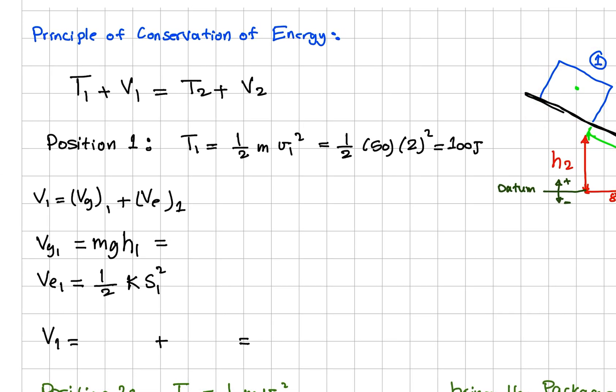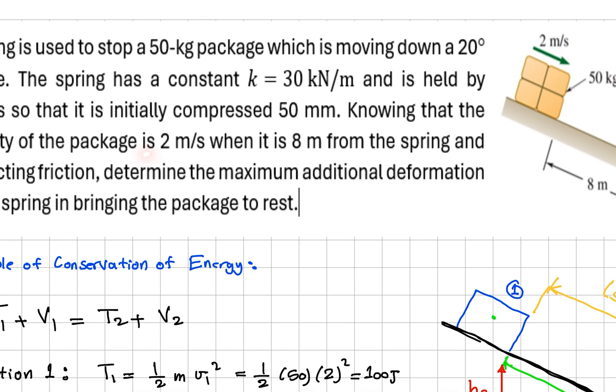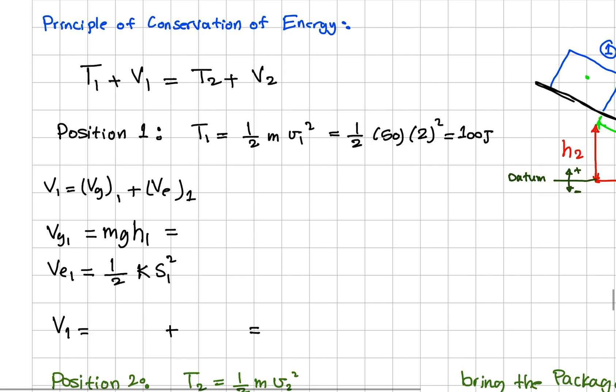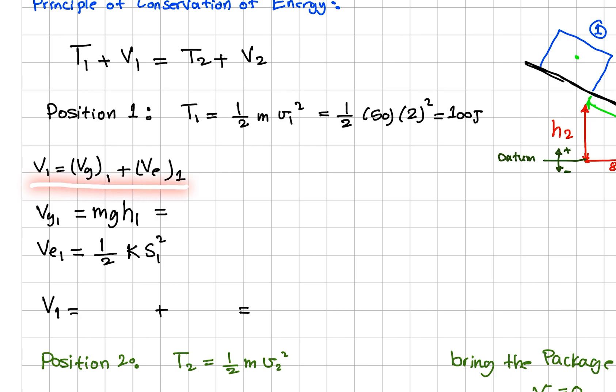Let's get to position 1 and see what we have. In position 1, we have kinetic energy since there is velocity of 2 meters per second given. So from here we can calculate the kinetic energy and then calculate the potential energy, which consists of the gravitational plus the elastic at point 1. Gravitational energy is mgh1, and from here we have m is 50 times g, which is the gravitational acceleration, times 8 sin θ, which is 20 degrees.